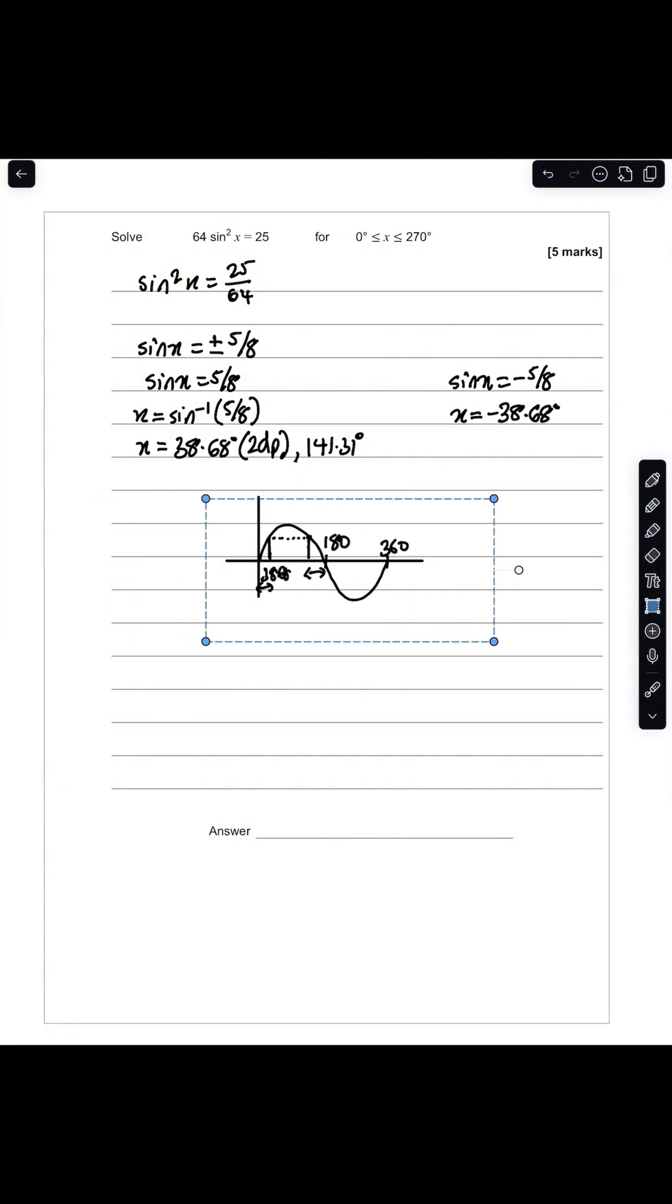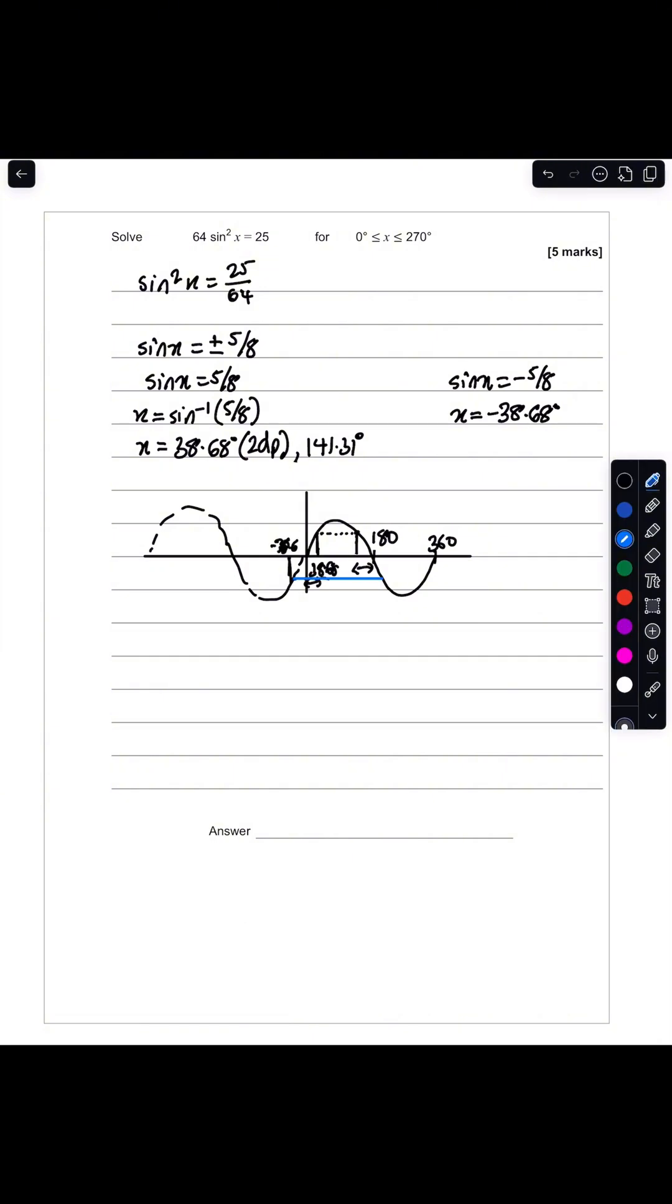So I'm going to extend this graph. If I extend this graph, my curve will look something like this. We can see that negative 38.68 will be somewhere here. So that's minus 38.68. And if you extend this line, you can see that your second value for x will be here.